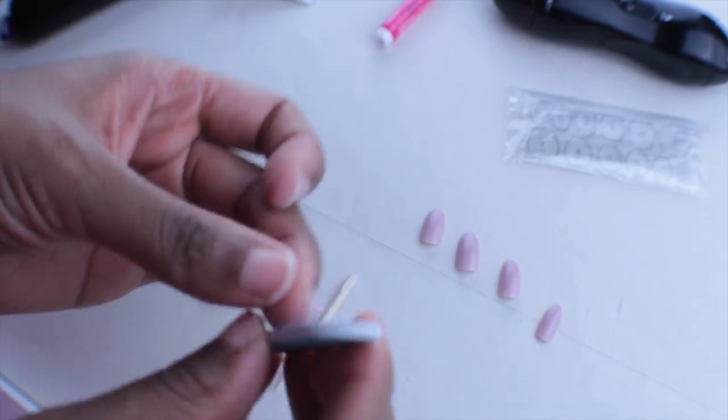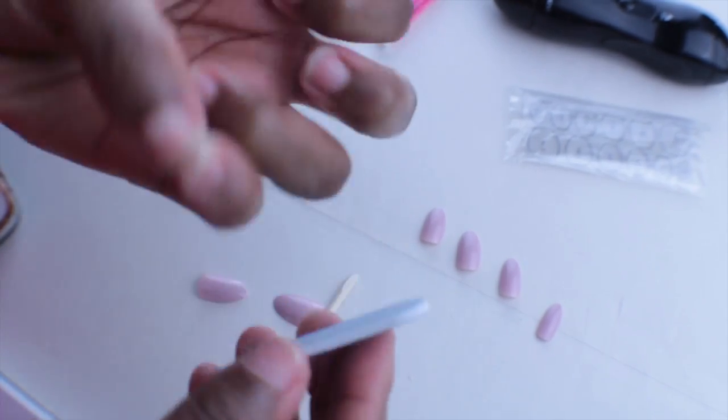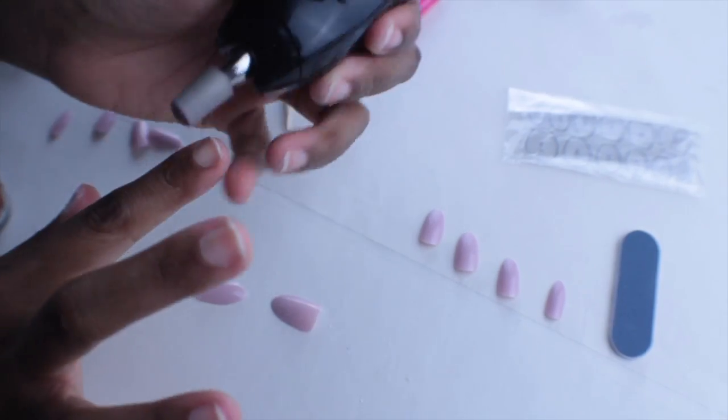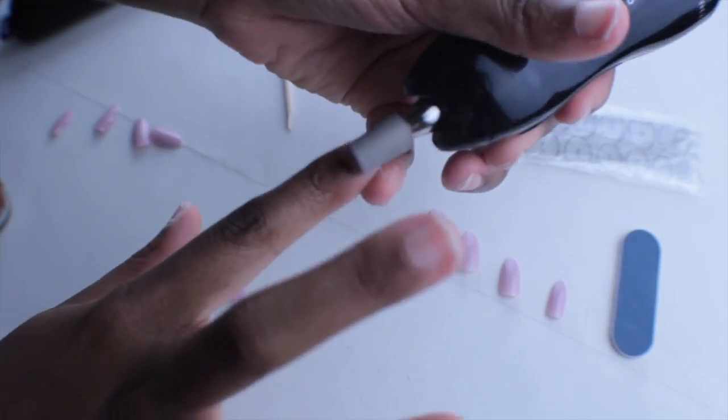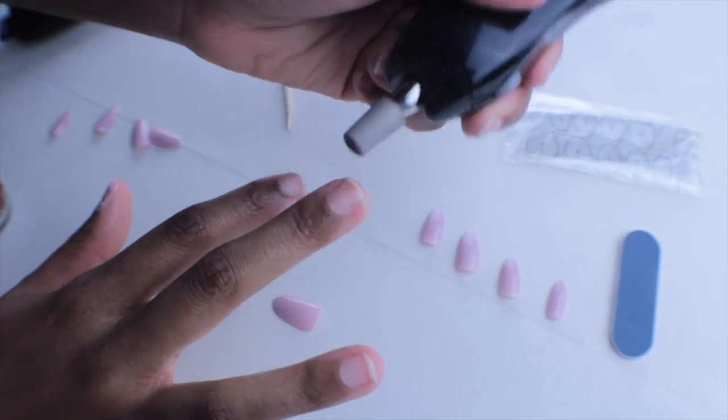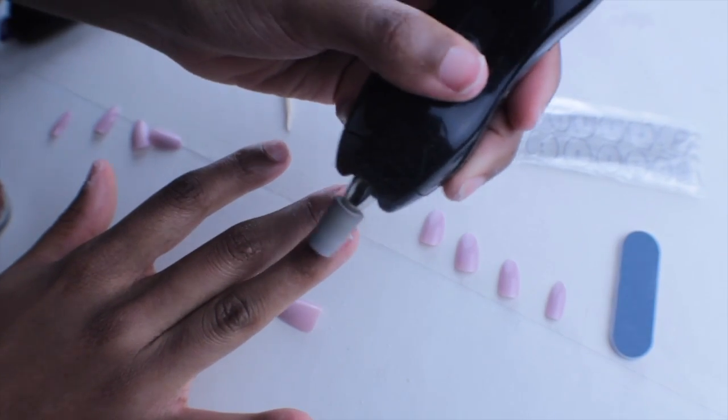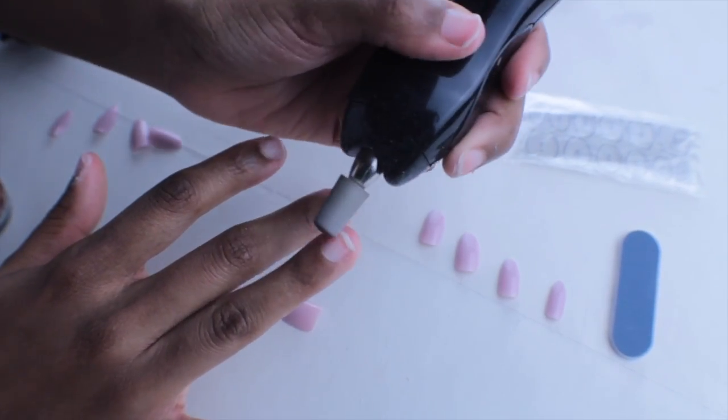I think that's pretty good for press-on nails. Right now I'm going through and filing down my nails, getting rid of any sharp edges, and also filing the top of the nail to get rid of the shine. Then I'm gonna go in with my nail drill really quick just to help and get rid of any of the shine on the top of my nails.